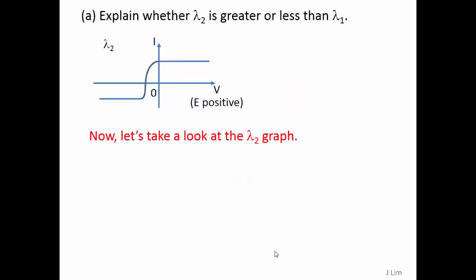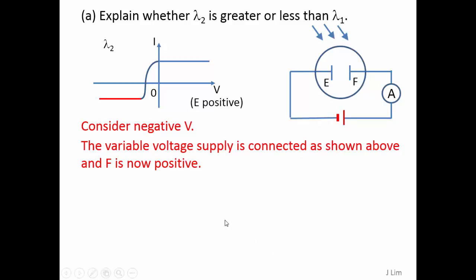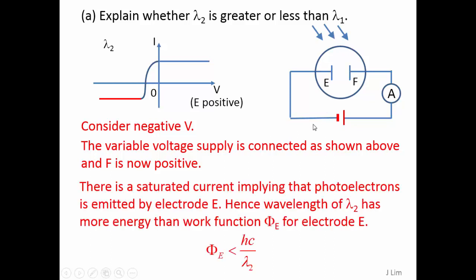Now let's take a look at the lambda 2 graph. Consider the negative voltage. So the variable supply is now connected as shown, where E is negative and F is positive. There is a saturated current shown in red,